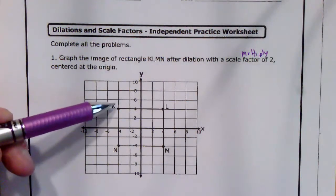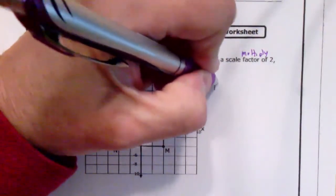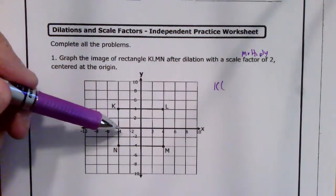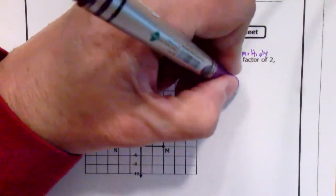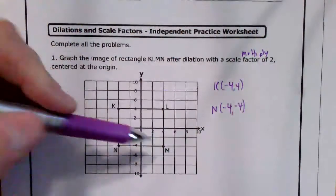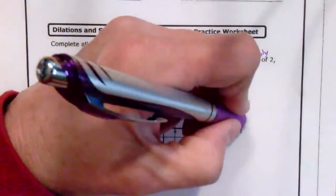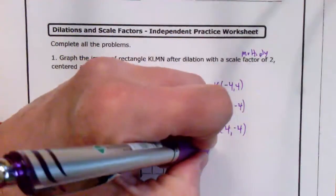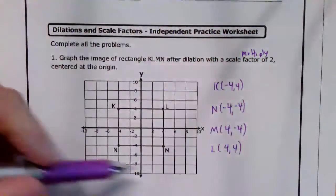First thing we need to do is identify each of these points with ordered pairs. Note this grid is going by twos. K, the original point, is at negative 4 for X and 4 for Y. N is negative 4 for X and negative 4 for Y. And L, the original point, is 4 for X and 4 for Y. So now we have all the ordered pairs for all four points.